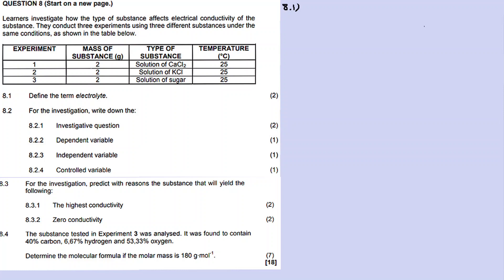An electrolyte is a substance or a solution that conducts electricity through the movement of ions. If we create a solution and no ions are formed - like with sugar - electricity cannot flow, because electricity needs ions to carry the electrons from one end to another. So that is the definition of an electrolyte.